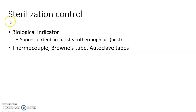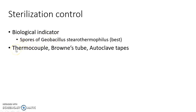Now let us see about sterilization control in autoclave. Spores of Geobacillus stearothermophilus are used as the biological indicator of sterilization control in autoclave — this is the best indicator. Other devices used in sterilization control in autoclave are thermocouple, Browne's tube, and autoclave tapes.